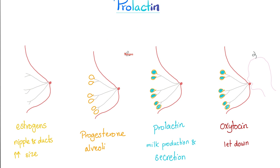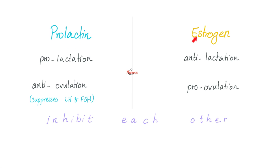Estrogen helps the breast grow by making the nipple and ducts and increasing breast size. Progesterone will add the acini or alveoli. Prolactin fills them with milk — because it's pro-lactation. Oxytocin pushes the milk out. Prolactin and estrogen hate each other: prolactin is pro-lactation but anti-ovulation, while estrogen is anti-lactation but pro-ovulation. A lady who is pregnant and breastfeeding at the same time is unlikely, because when breastfeeding you are in prolactin land, which inhibits ovulation. When pregnant, you are in estrogen land — pro-ovulation but anti-lactation.